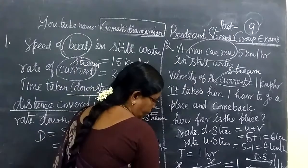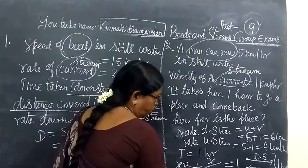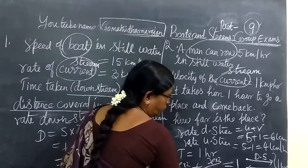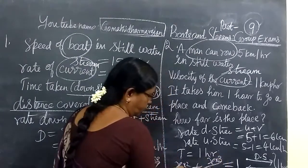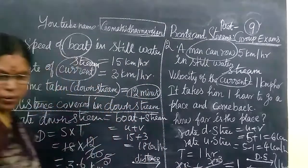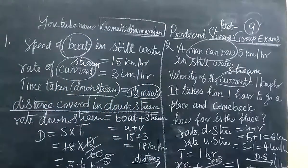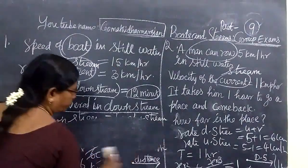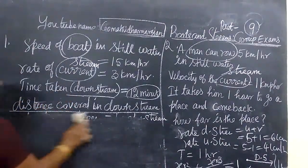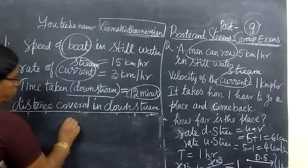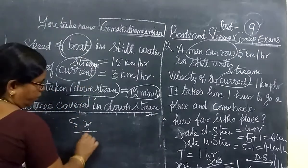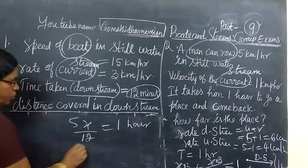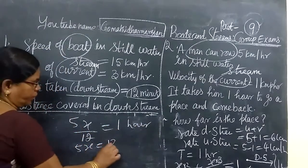So if we take the LCM, here into 2, into 2, here also into 2, into 2, sorry, into 3. So 3x plus 2x equals 5x. So 5x by 12 equals 1 hour. So cross multiply, 5x equals 12.